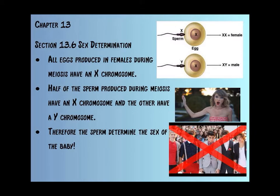All eggs produced in females during meiosis have an X chromosome. As you can see, we have an egg that has an X chromosome, and another egg that has an X chromosome. Remember when we discussed the difference in the sex cells — they are both haploid. So this egg has 23 chromosomes, this egg has 23, this sperm has 23, and this sperm has 23. The goal of fertilization is establishing that dual chromosome set of 46 total chromosomes, or the diploid 23 pairs.